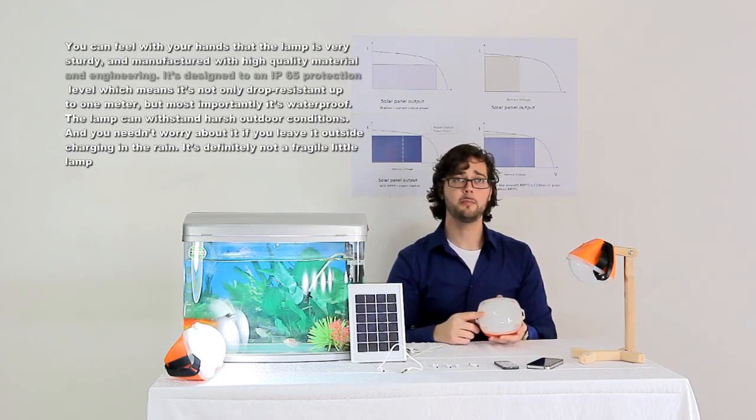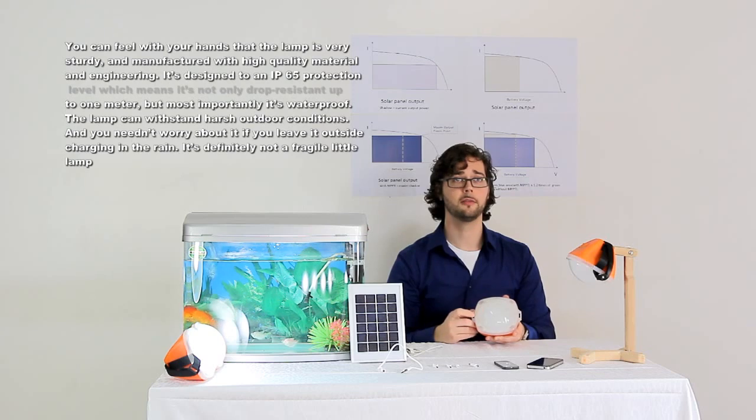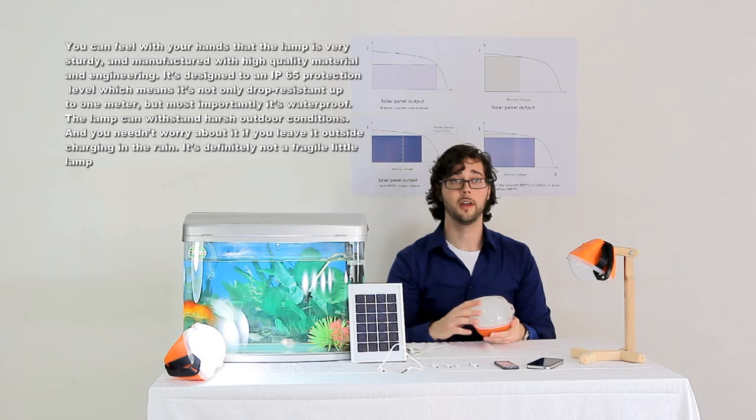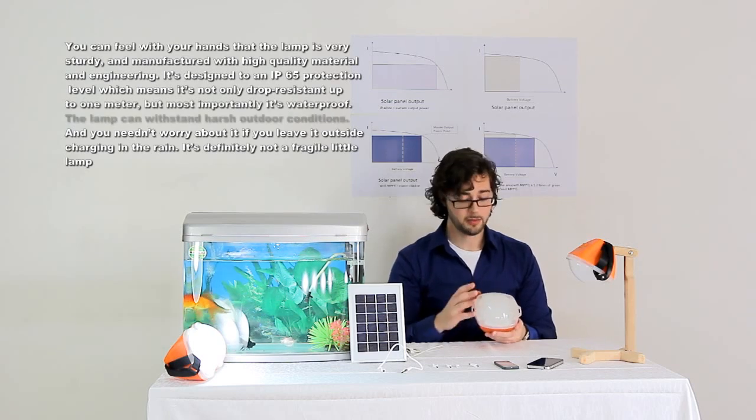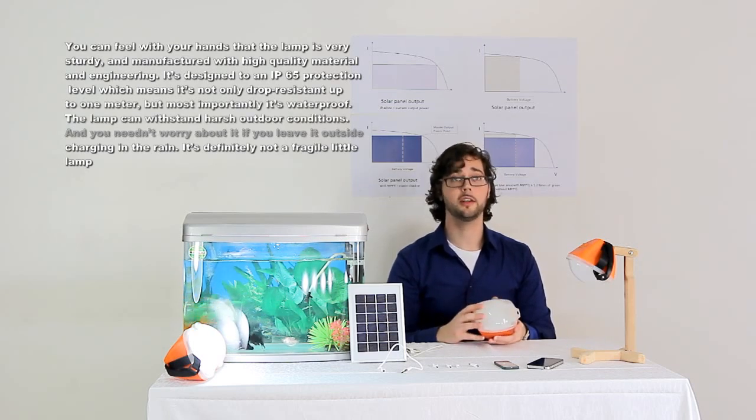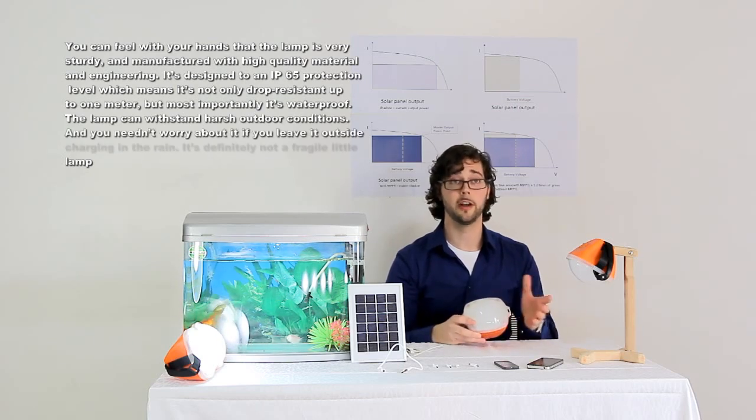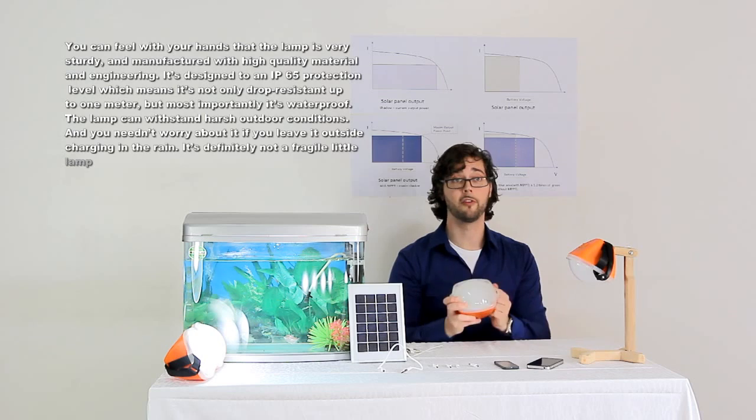It's designed to an IP65 protection level, which means it's not only drop resistant up to one meter, but most importantly, it's waterproof. The lamp can withstand harsh outdoor conditions, and you needn't worry about it if you leave it outside charging in the rain. It's definitely not a fragile little lamp.